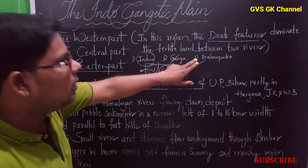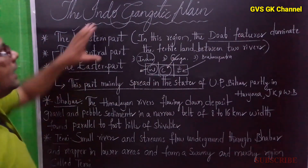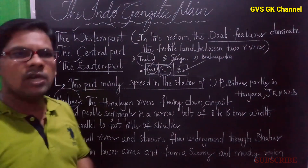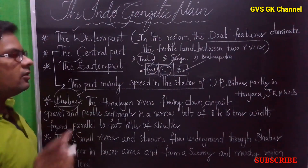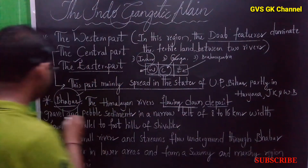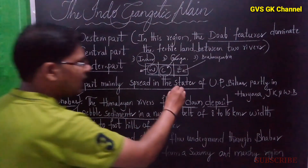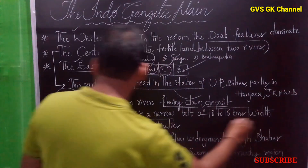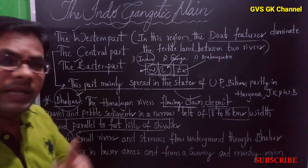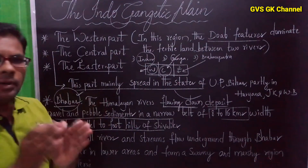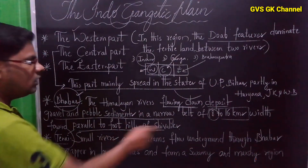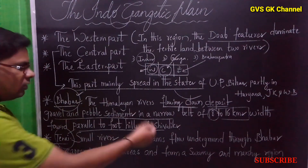The eastern part was formed with the Brahmaputra river and mostly belongs to the eastern states of India. One more important topic is Bhabar and Terai. The Himalayan rivers, while flowing down, deposit gravel and pebble sediments in a narrow belt of the Himalayan ranges — with 8 to 16 kilometers width — parallel to the foothills of the Shivaliks. This is called Bhabar.